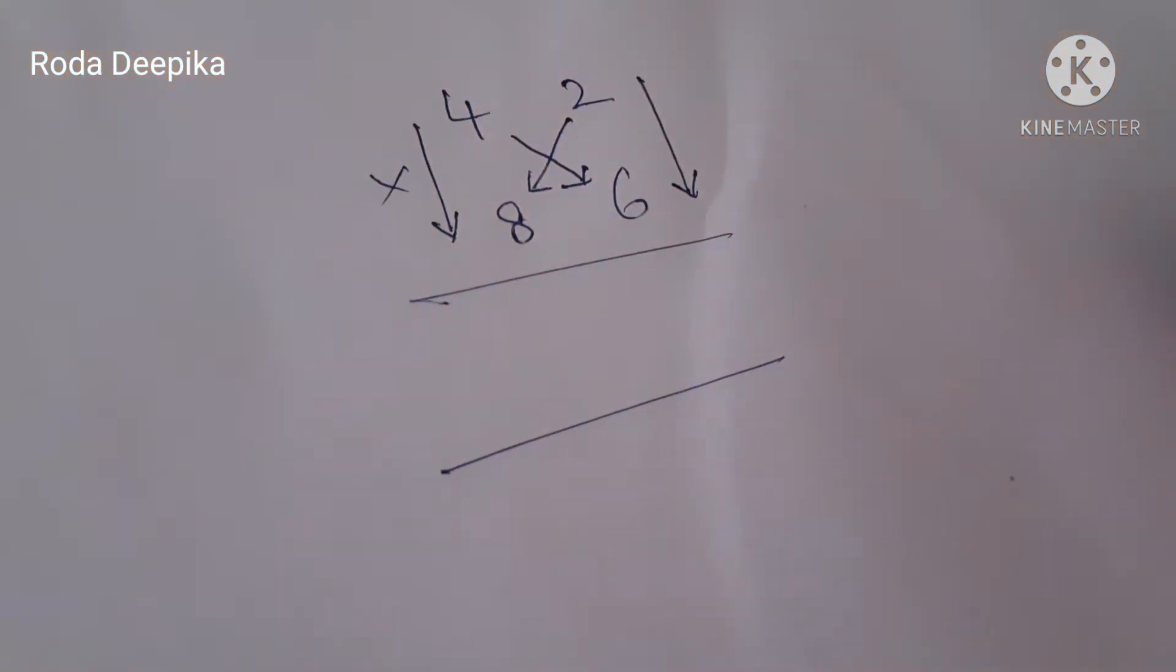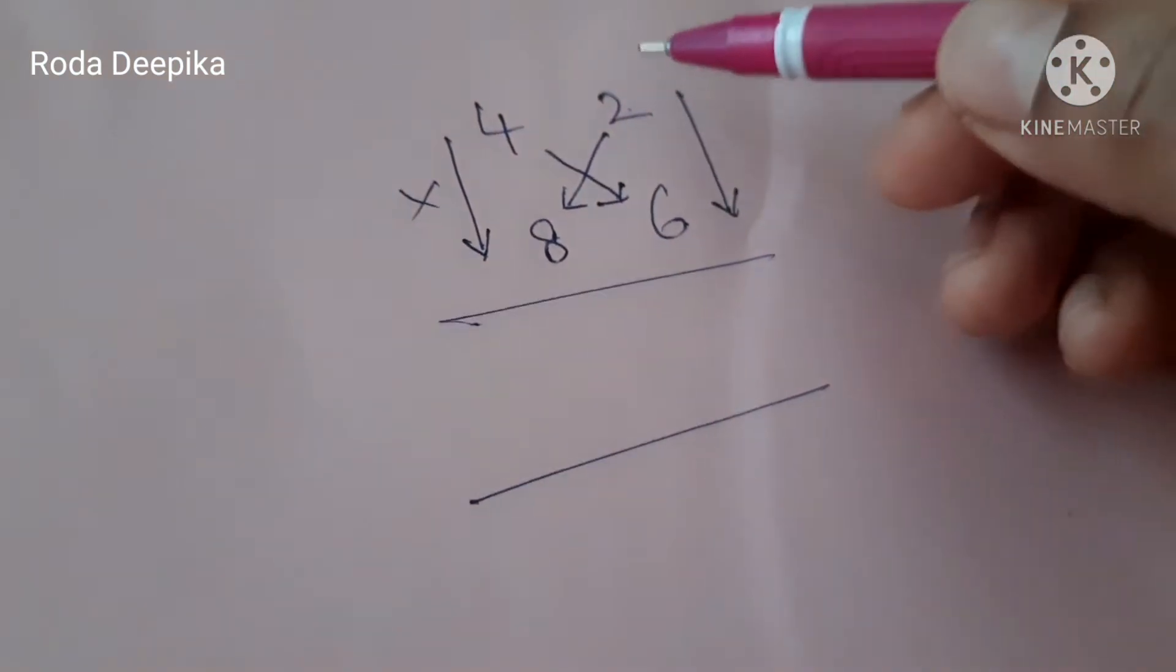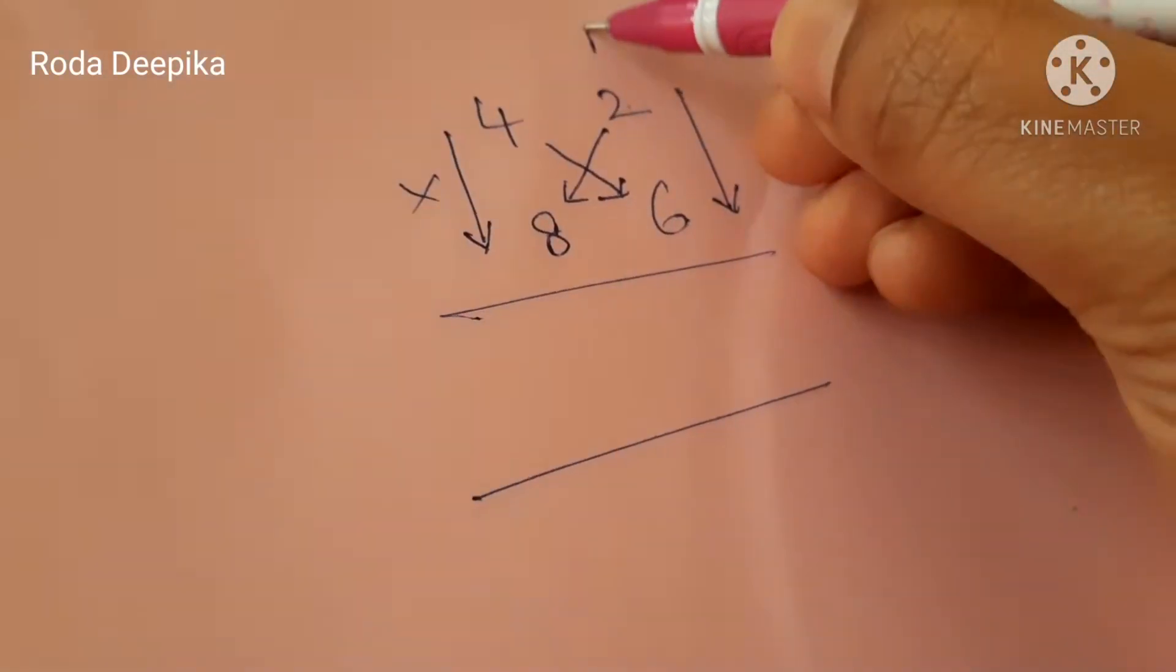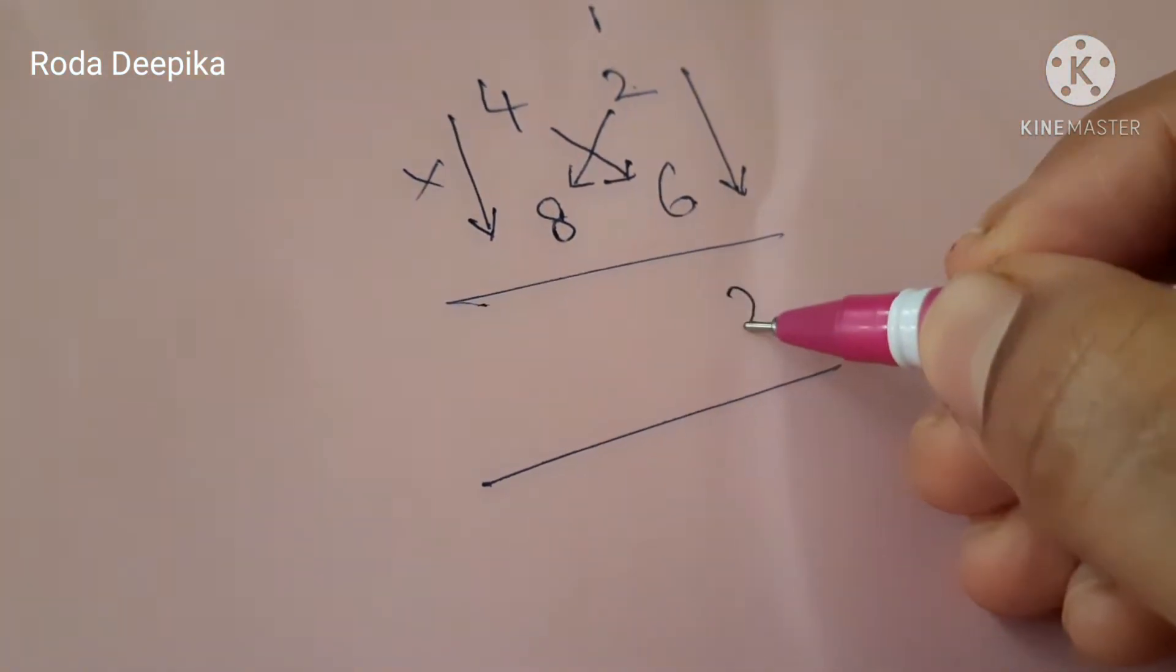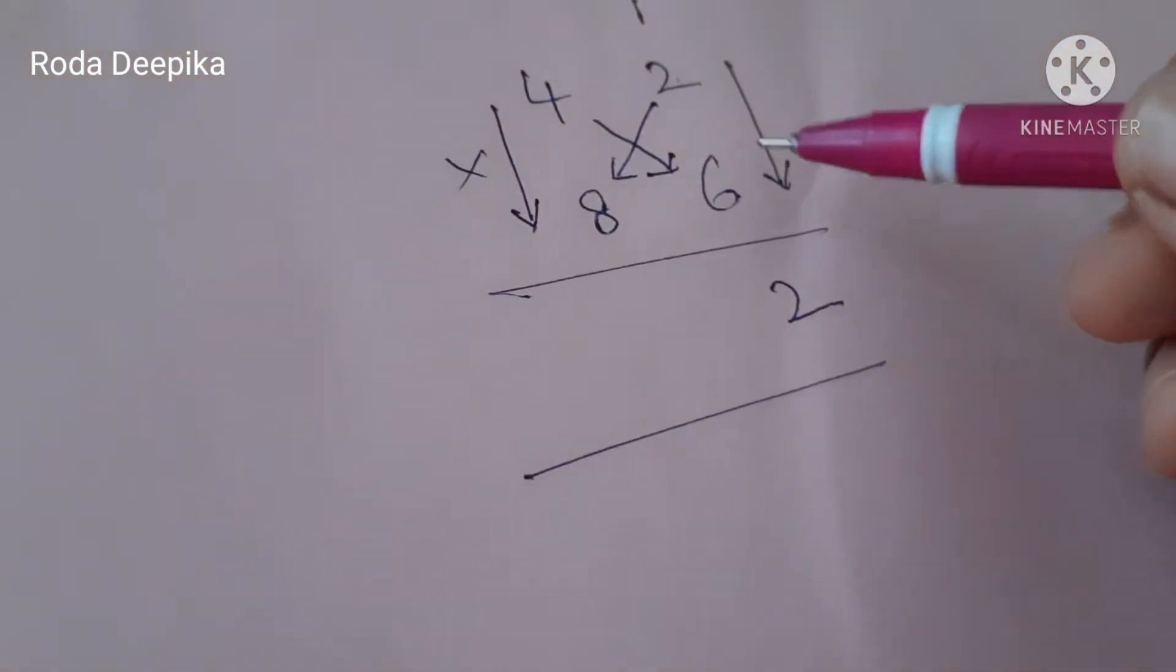For doing this multiplication trick we have to start from right to left. First multiply the ones digit together. 2, 6 are 12. Put 1 above and 2 below.